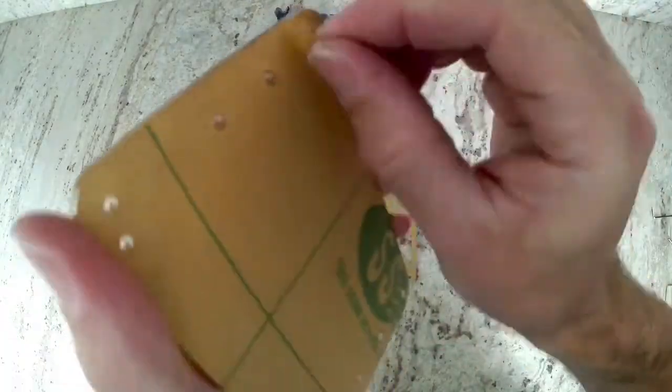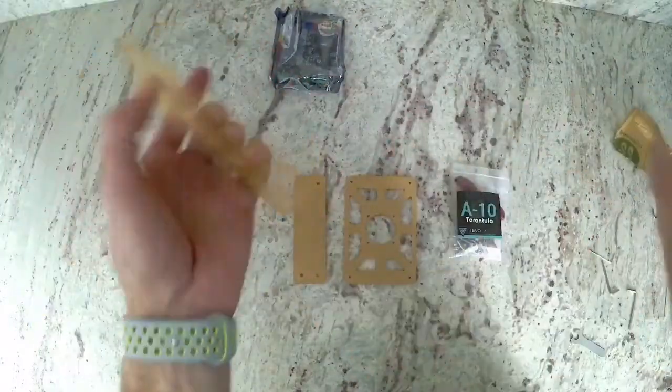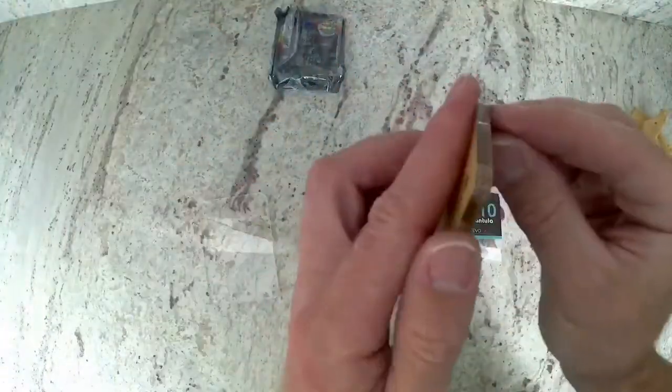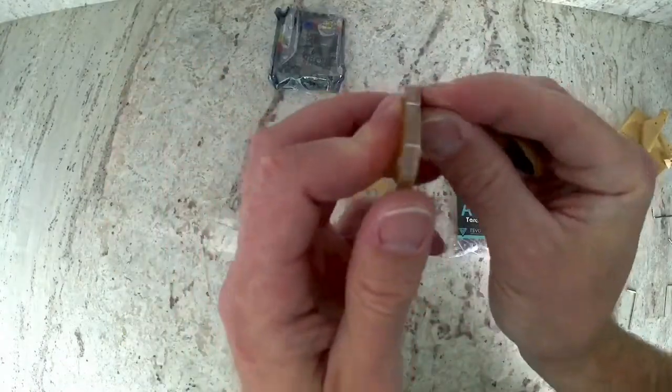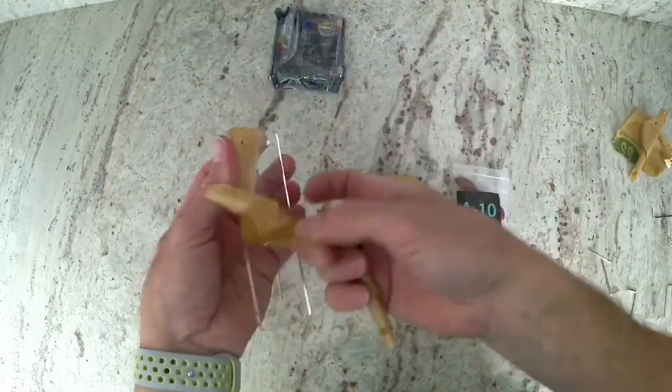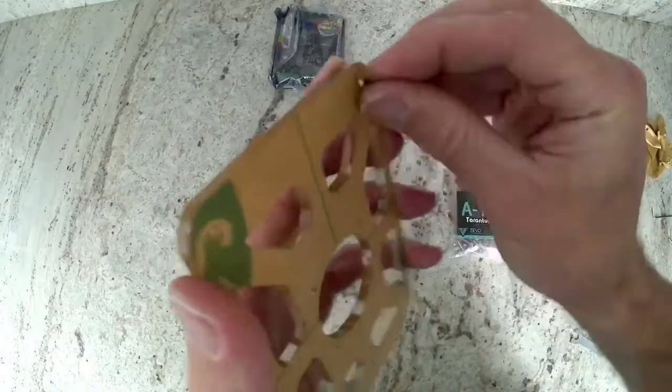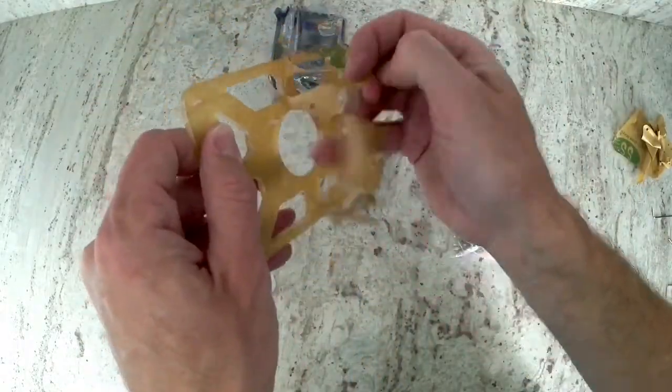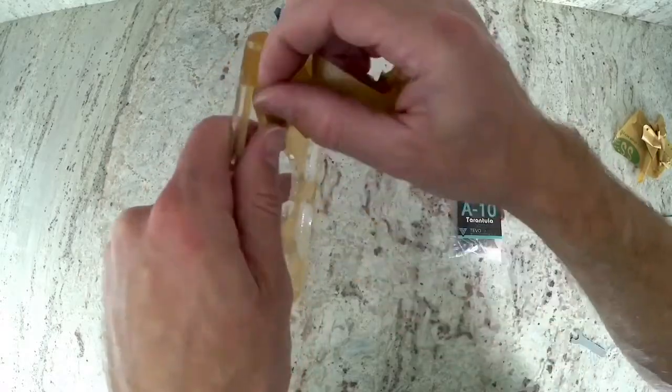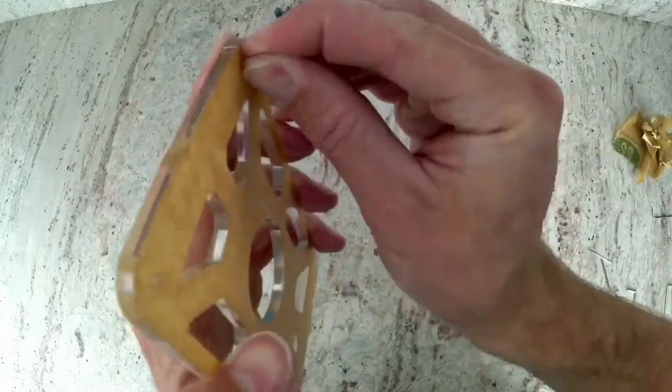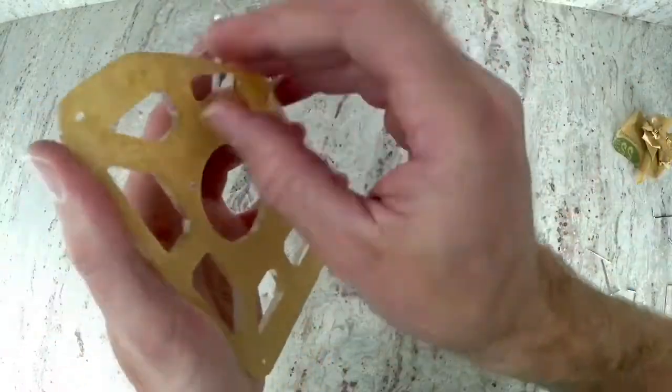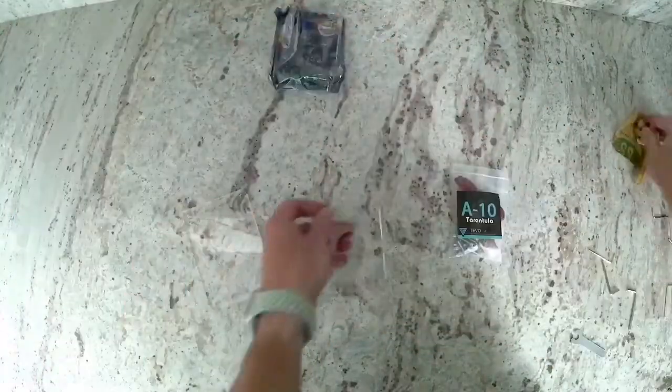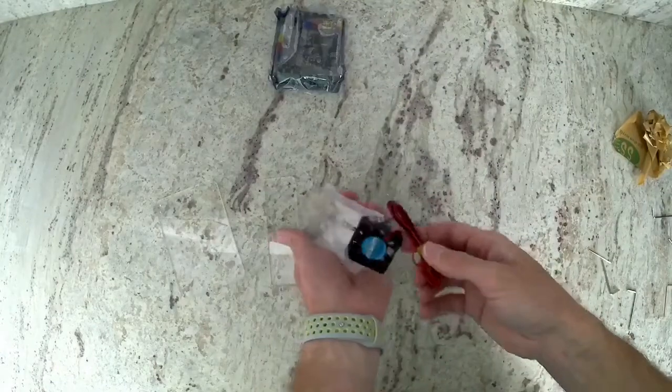Start by peeling the paper backing off of both sides of all three acrylic panels. Now go ahead and empty the contents of bag A-10.